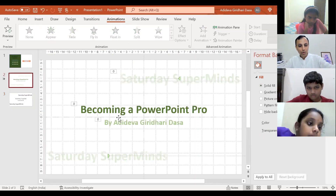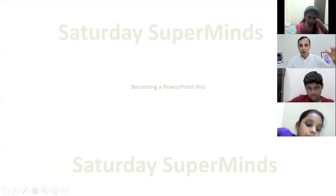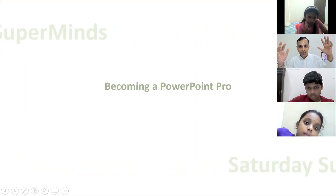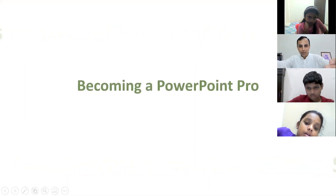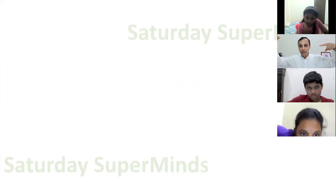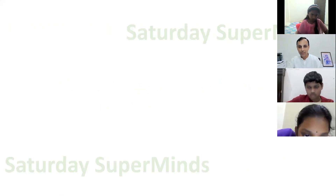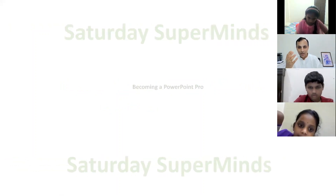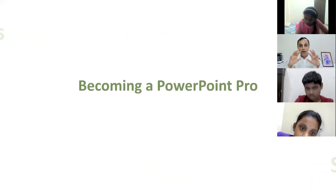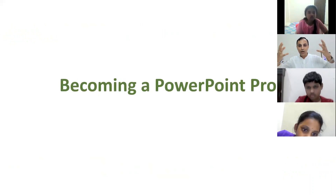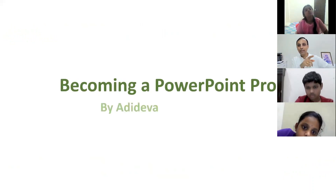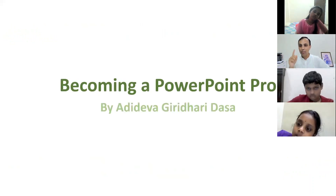Let's see it again. All of these are happening together — the one in the center is coming out. At the same time, the top and the bottom are moving in opposite directions. Once the center has come out fully, then the text comes one by one, letter by letter.